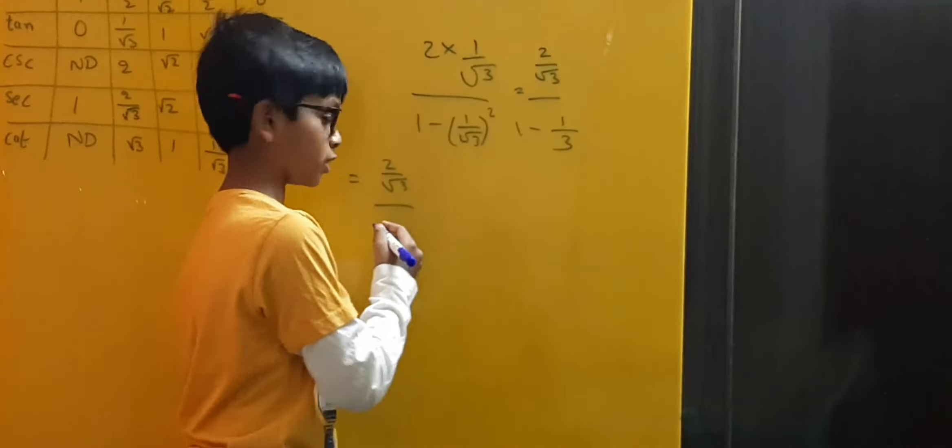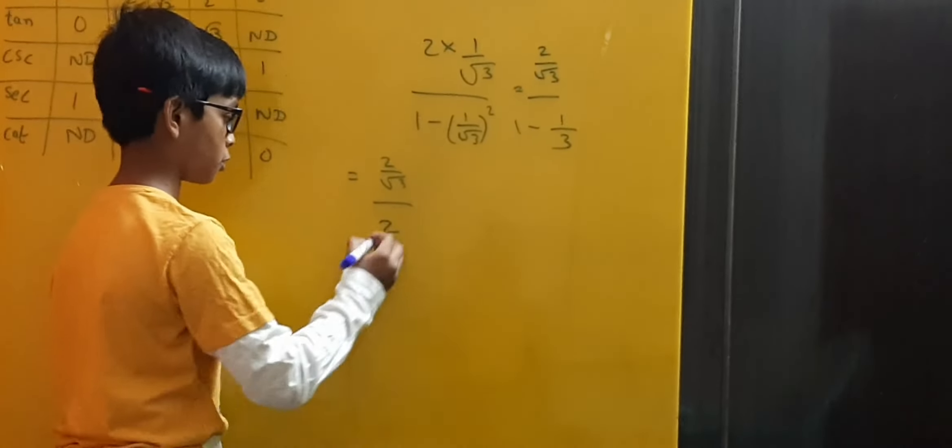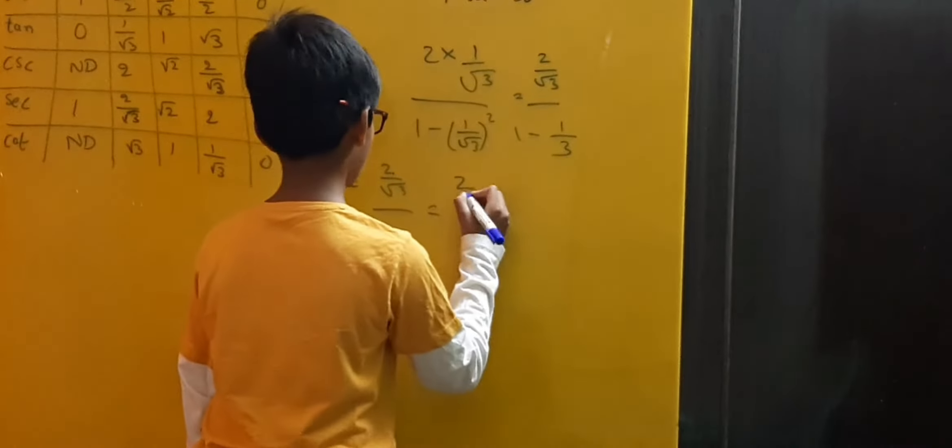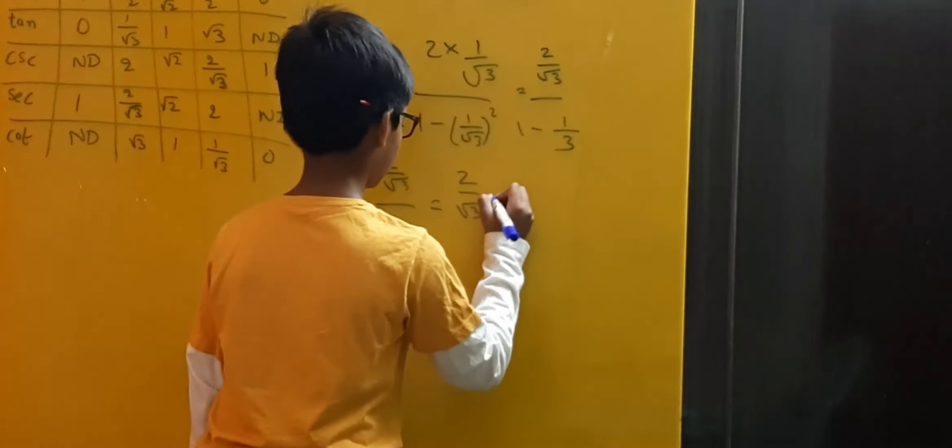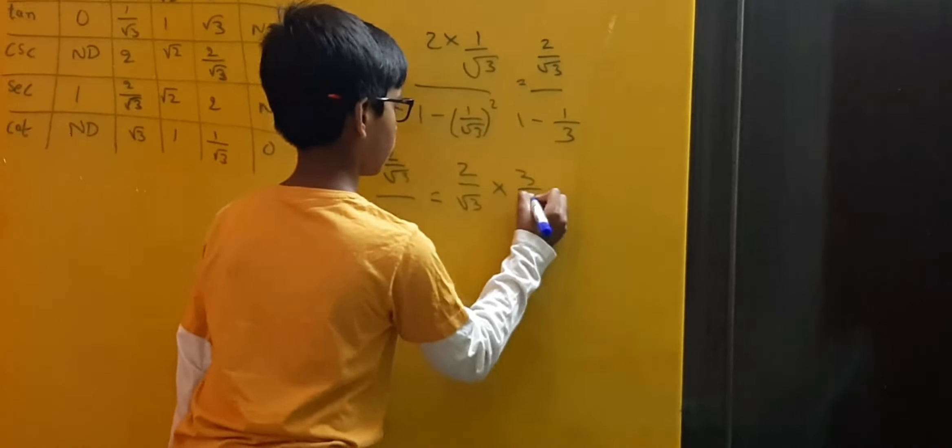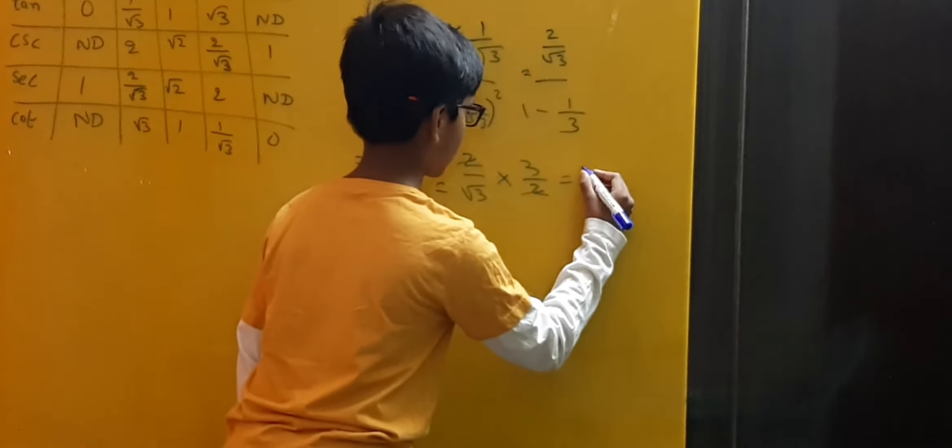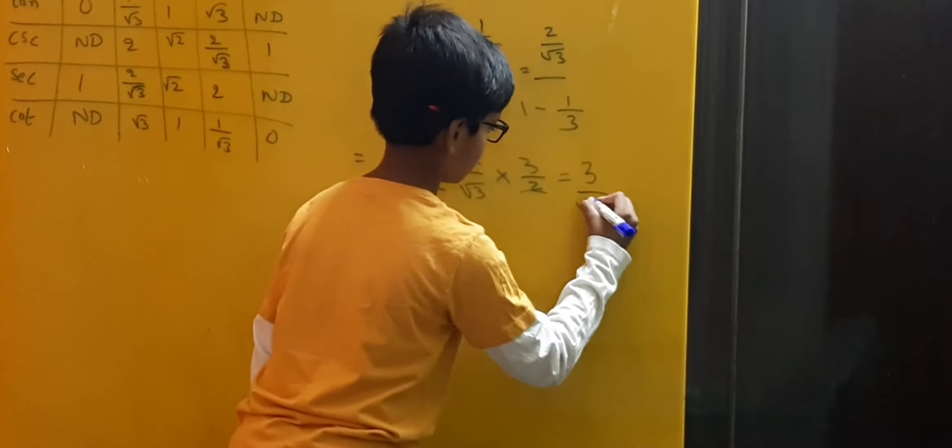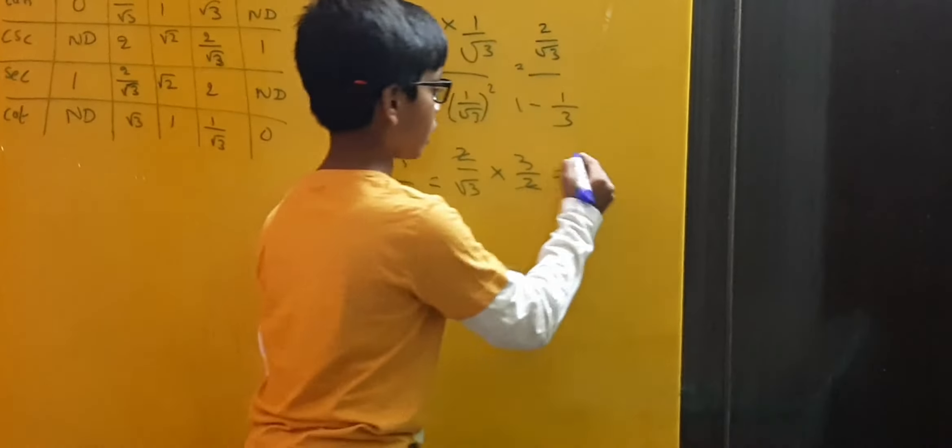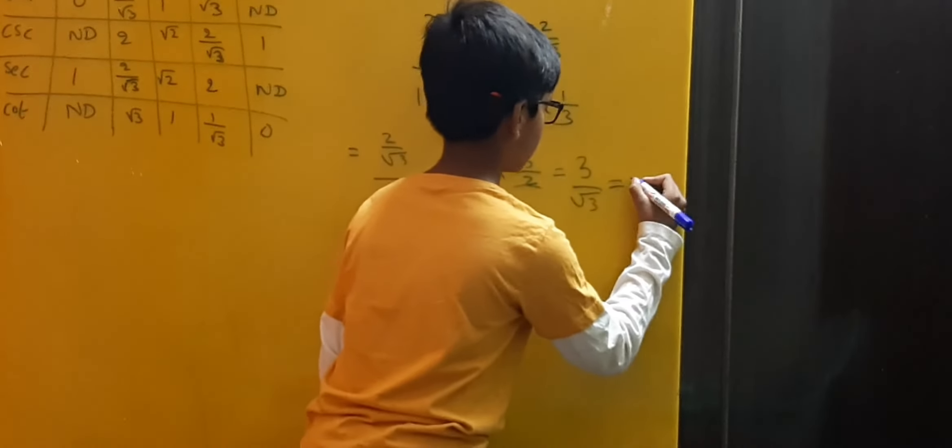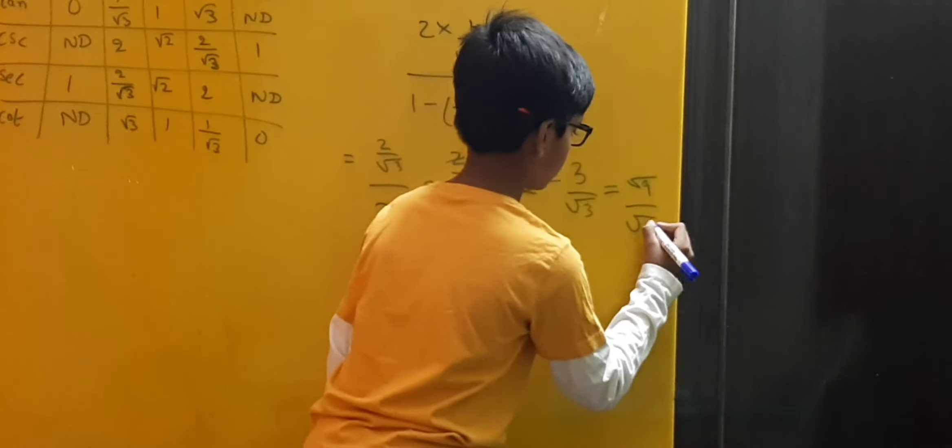This fraction goes to the top and becomes its reciprocal. Is equal to 2 by root 3 into 3 by 2. Here 2 and 2 gets cancelled and 3 by root 3 is left behind. Here we can write 3 as root 9. Root 9 by root 3.